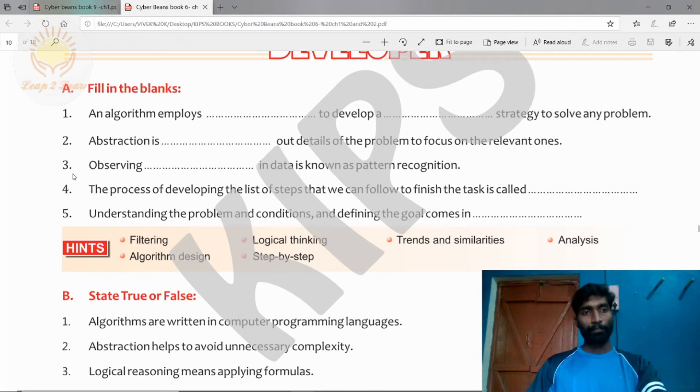Third question: observing dash in data is known as pattern recognition. Observing trend and similarity in data is known as pattern recognition.